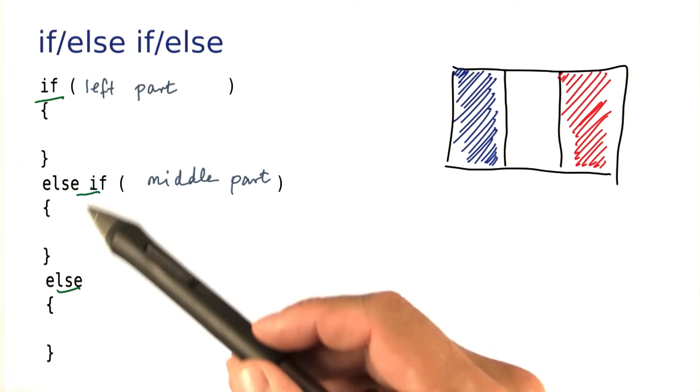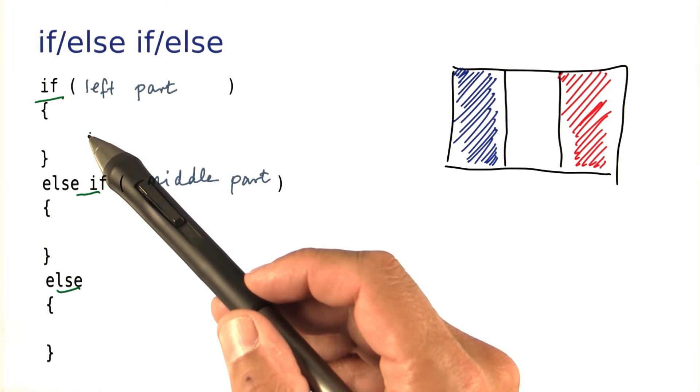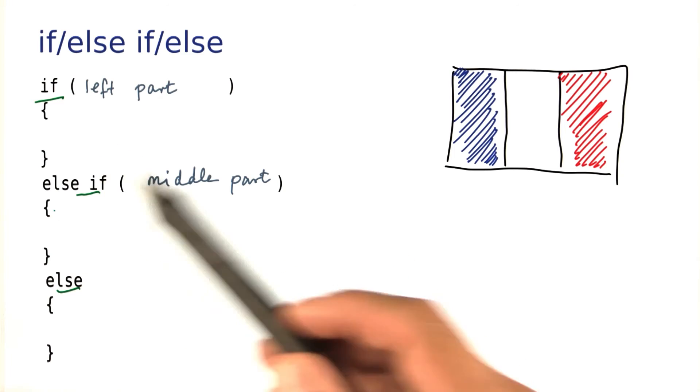They get worked on from the top to the bottom as you would expect. The first condition gets checked. If it's fulfilled, the statement is executed in here, and everything else is skipped.